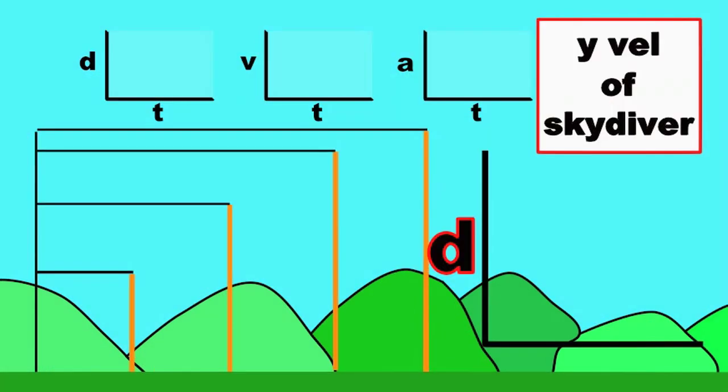But what about the y direction? The black lines indicate the vertical position at each time interval. Since there is a net force acting vertically, the distance increases at each time interval.